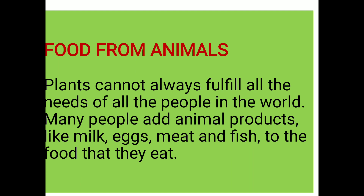Now come to food from animals. Plants cannot always fill all the needs of all the people in the world. Many people add animal products like milk, eggs, meat and fish to the food that they eat. So many food items you can get from animals. You can draw five food products from animals on page number 62 — milk, egg and fish.